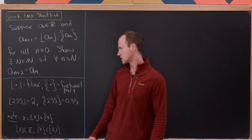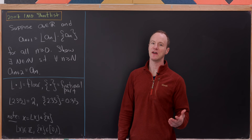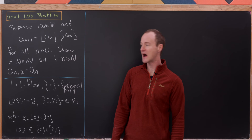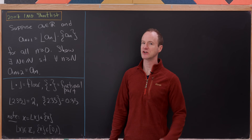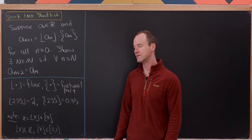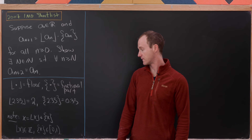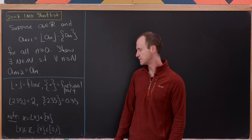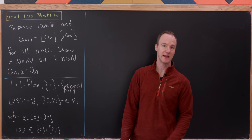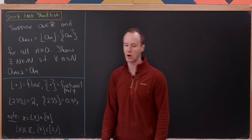As a reminder: the floor is like an elevator down to the closest integer, so the floor of 2.35 is 2. The fractional part is well named: the fractional part of 2.35 is 0.35. For any real number x, x equals the floor of x plus the fractional part of x. The fractional part is always in [0, 1), and the floor is always an integer.